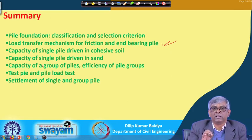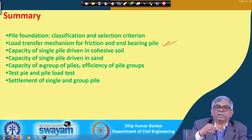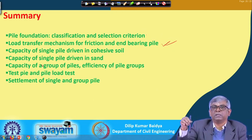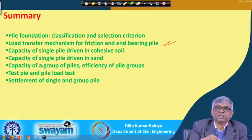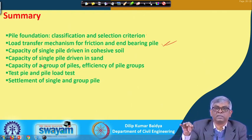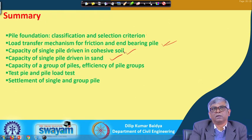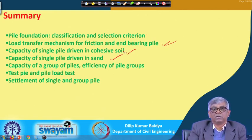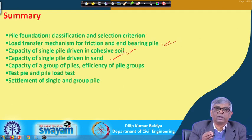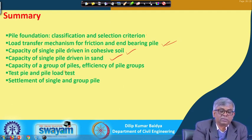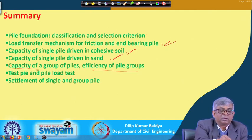For a single pile driven in clay, you can estimate its capacity; for a single pile driven in sand, you can also estimate the capacity. These two cases are important and must be learned. In practice, a group of piles is most often used, so group pile capacity and efficiency are also essential. Efficiency is the ratio of actual group capacity to the sum of individual pile capacities multiplied by the number of piles.